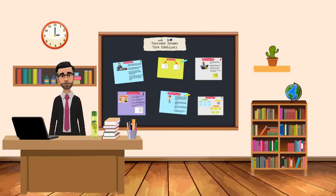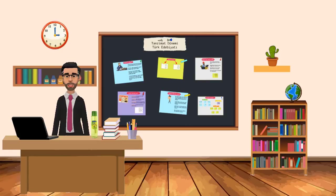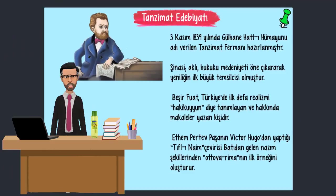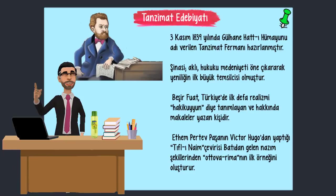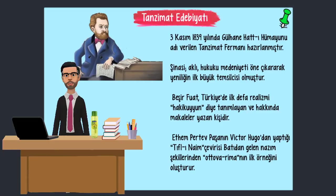Merhaba değerli arkadaşlar. Bu dersimizde Tanzimat Dönemi Türk Edebiyatı'nı geniş anlamda ele alacağız. Dersimize başlamadan önce videonun açıklama kısmında bulunan PDF belgesinin bu slayttan daha detaylı olduğunu belirtmek isterim. Şimdi dersimize başlayabiliriz. İlk olarak Tanzimat Edebiyatı nasıl doğmuş ona bakalım. 3 Kasım 1839 yılında Gülhane Hattı Hümayun adı verilen Tanzimat Fermanı hazırlanmıştır.